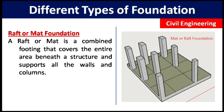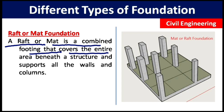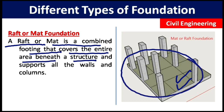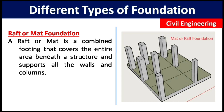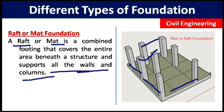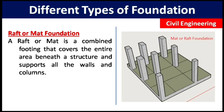The next type is raft or mat foundation. This type is generally used for large structures so that the foundation does not settle unevenly and the structure remains stable. A raft or mat is a combined footing that covers the entire area beneath the structure — all columns are tied into a single footing. It supports not only columns but also RCC walls and brick walls.